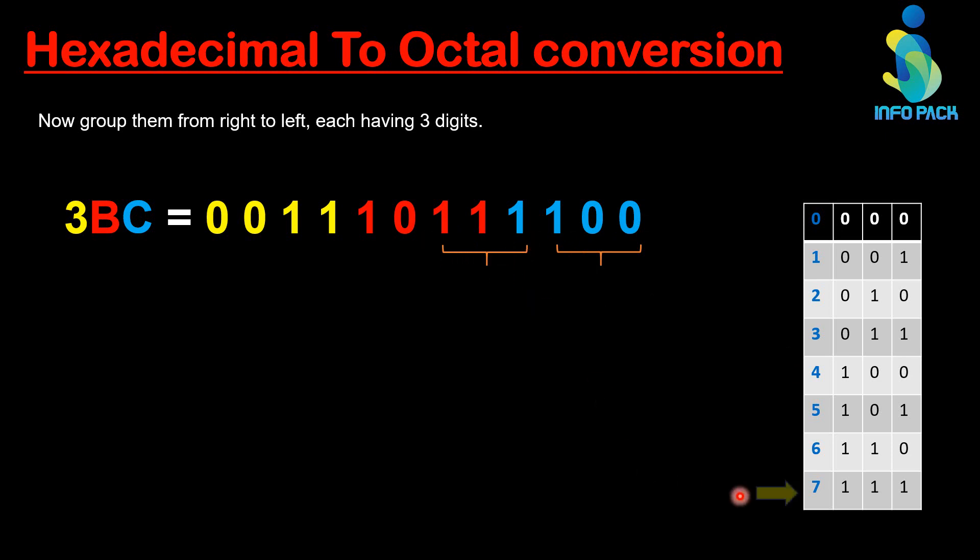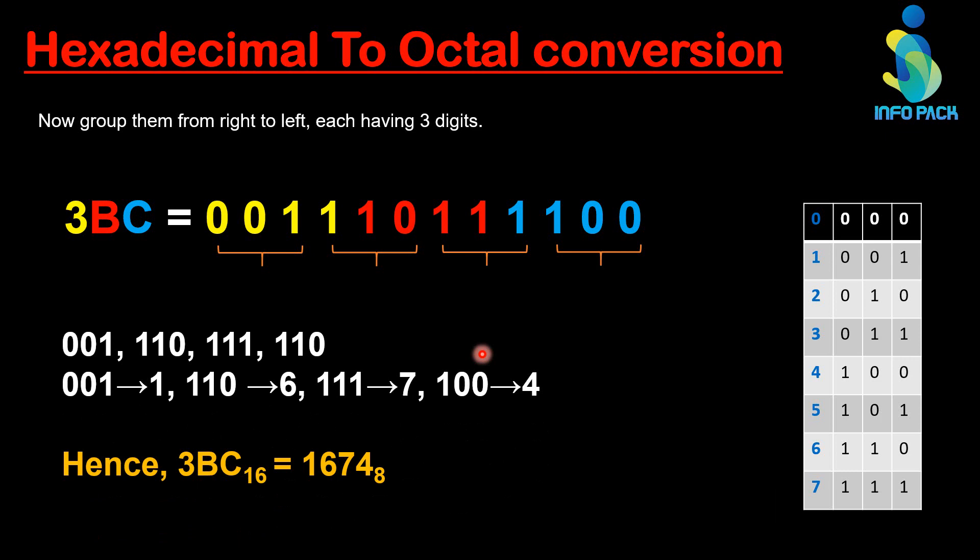Next group is triple 1 and it is equal to 7 in octal table. Next group is 110 that is equal to 6 in octal table. Next group is 001 that is equal to 1 in octal table. Write all the binaries at same position.